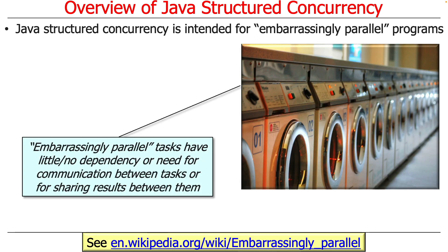Structured Concurrency is generally intended primarily for what are known as embarrassingly parallel programs. Embarrassingly parallel just means there's little or usually no dependency or need to communicate between tasks or share results between them until they're all finished. A great example is a laundromat where you could have dozens of washers and dryers running in parallel — as long as there are free washers or dryers, you can keep scaling up. One washer doesn't care what the other washer's load is; they all wash independently. The word 'embarrassingly' comes from the phrase 'embarrassment of riches' — it means there's so much parallelism we don't know what to do about it.